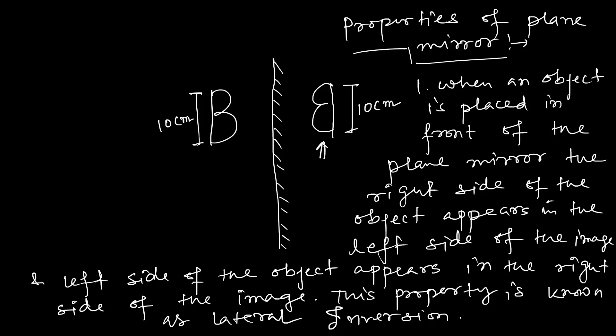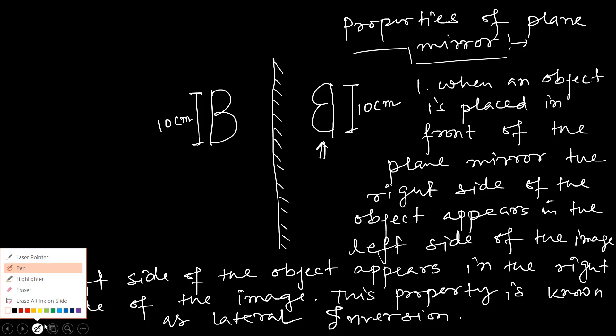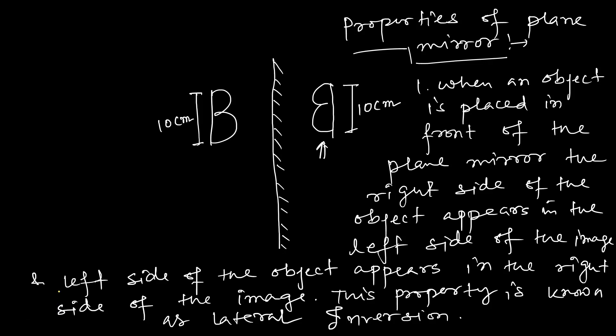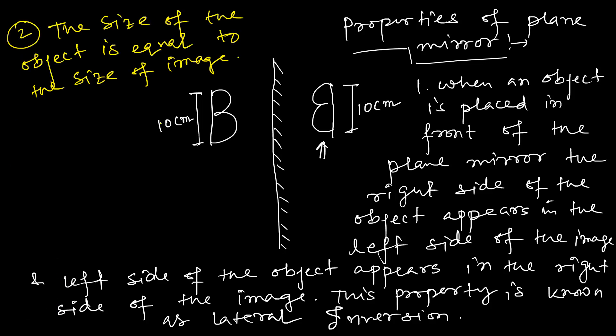Moving on to the next property: the size of the object is equal to the size of the image. That is the second point. Now for the third point — if I ask you whether the image formed in a plane mirror is real or virtual, what would you say?